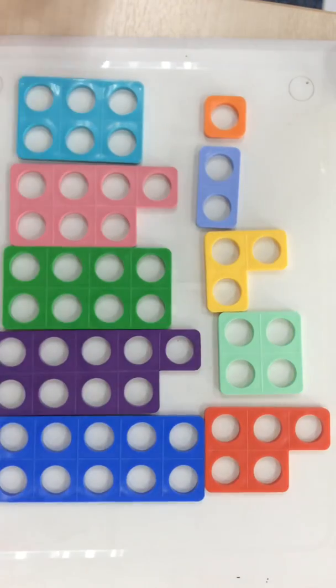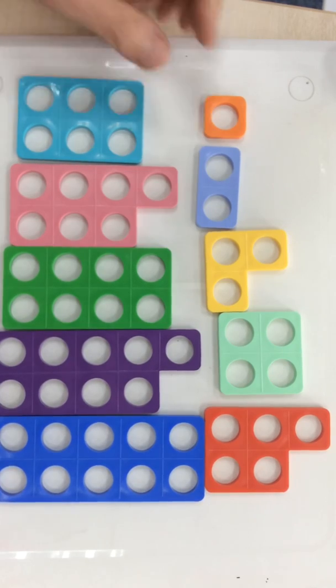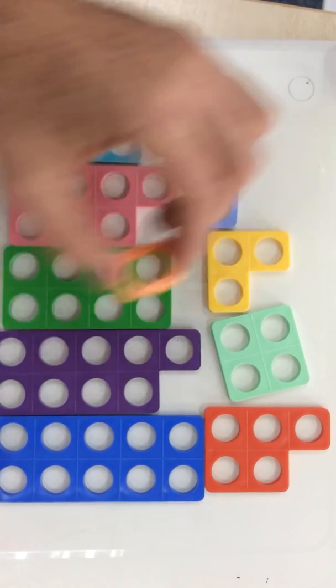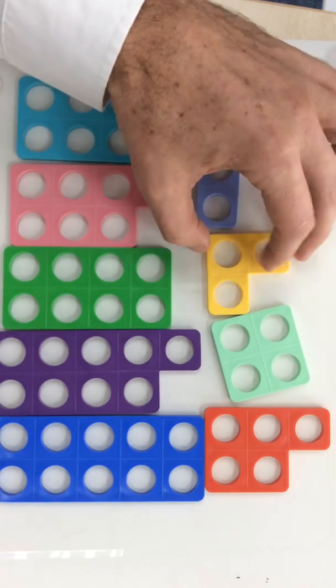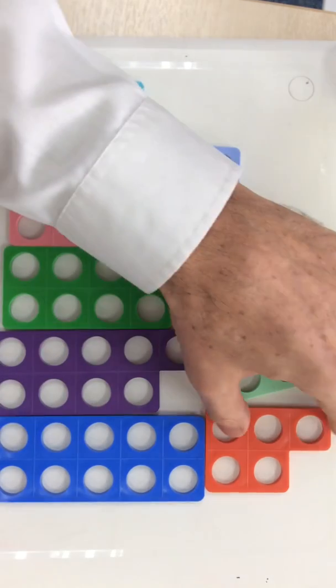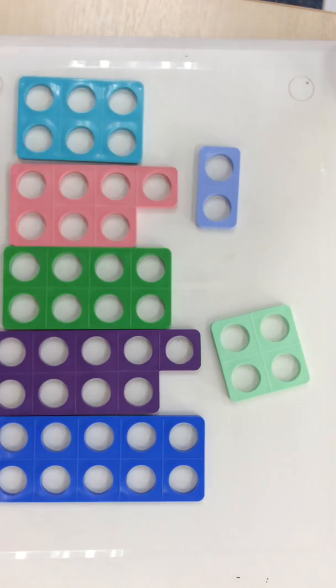So I'm going to take away the lumpy numbers and these lumpy numbers are odd numbers. I'm going to take away 1, I'm going to take away 3, that's got a lumpy part, and I'm going to take away 5 which also has a lumpy part.